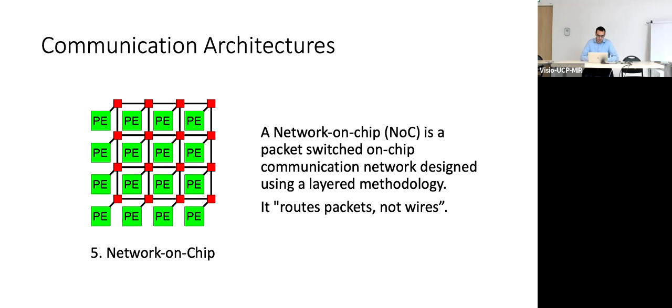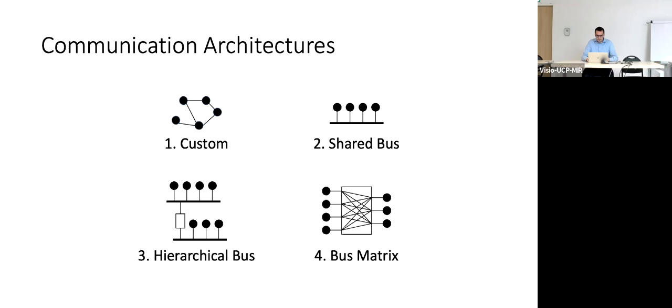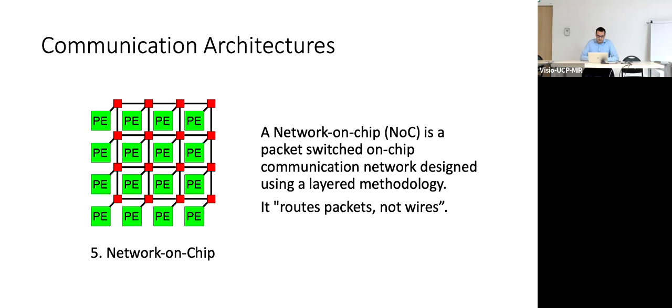The idea of network-on-chip was published in an academic journal around 2001. The article stated that a change was needed in the way elements are connected inside a single processor, mimicking what happens in computer networks. An important point was that designers and engineers should not think about routing wires — creating different shapes of connections — but should think about routing the data, because data are the important things in computation.